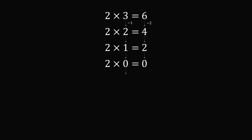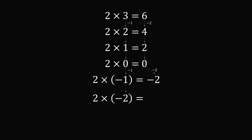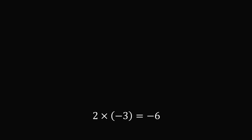If we continue the pattern and decrease the second number by 1, we will have 2 times negative 1, and this should decrease the product by 2. So decreasing the product by 2 will be 0 minus 2, and the product will be minus 2. If we decrease the second number by 1 again we have 2 times negative 2, and the product will decrease by 2, so this will be minus 4. We then have 2 times negative 3, which decreases by 2, so the product will be equal to negative 6.